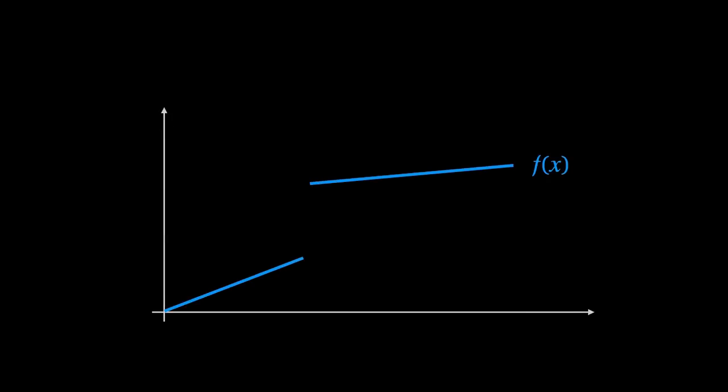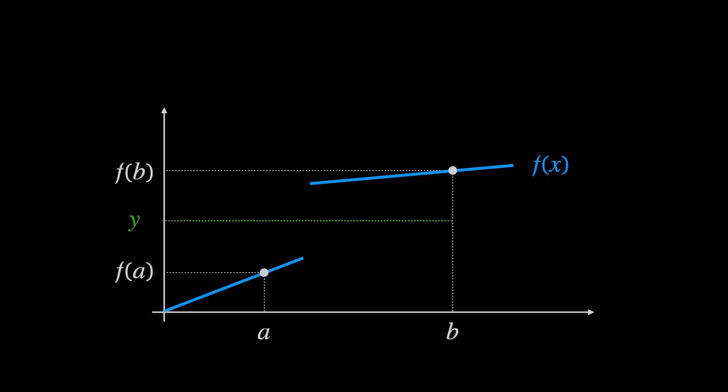To understand why the Intermediate Value Theorem works, consider a discontinuous function. Here, there is a jump where it's possible to find a value Y between f(A) and f(B), such that there isn't a corresponding X value between A and B such that f(X) is equal to Y.